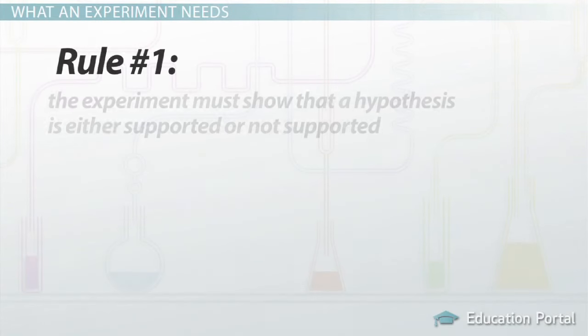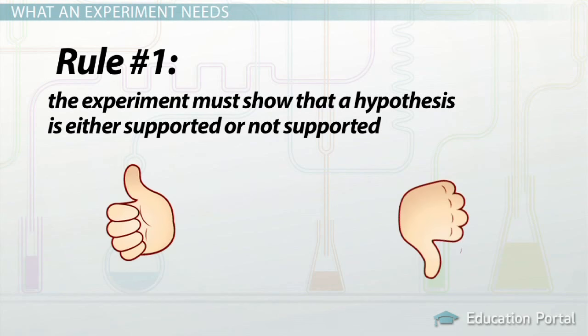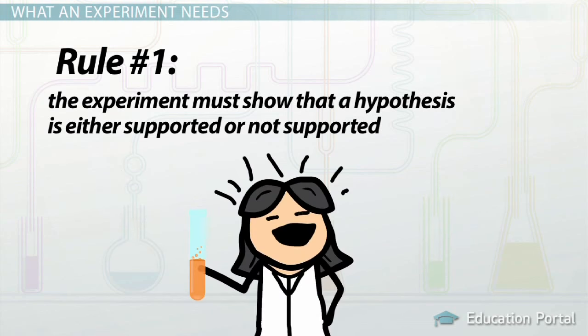Rule number one, the experiment must show that a hypothesis is either supported or not supported. In science, we try to avoid using terms like right and wrong, and we don't say that hypotheses are proven or disproven until we're really sure about it. A single experiment is not enough to prove anything with 100% certainty.